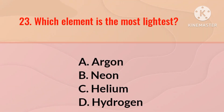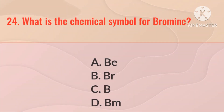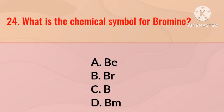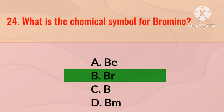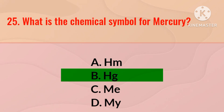Which element is the lightest? The right answer is hydrogen. What is the chemical symbol for bromine? The right answer is Br. What is the chemical symbol for mercury? The right answer is Hg.